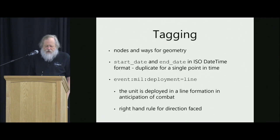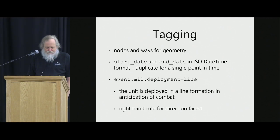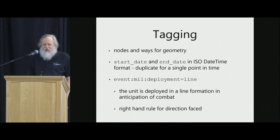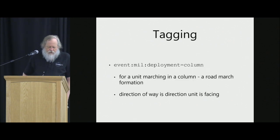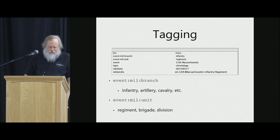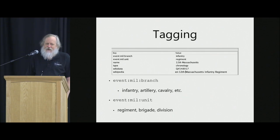Nodes and ways for geometry, start date and end date in ISO date-time format. If it's a single point in time, you just put the same date in both start date and end date, so we don't even need a new tag there. Then create a specific tag — event:military_deployment=line — to say it's a line of troops heading to combat. The direction they face comes from the right-hand rule off the direction of the vector. For a column marching, it's just the direction of the way. I've actually added Wikidata and Wikipedia links for the 12th Massachusetts Infantry Regiment because they have their own items.